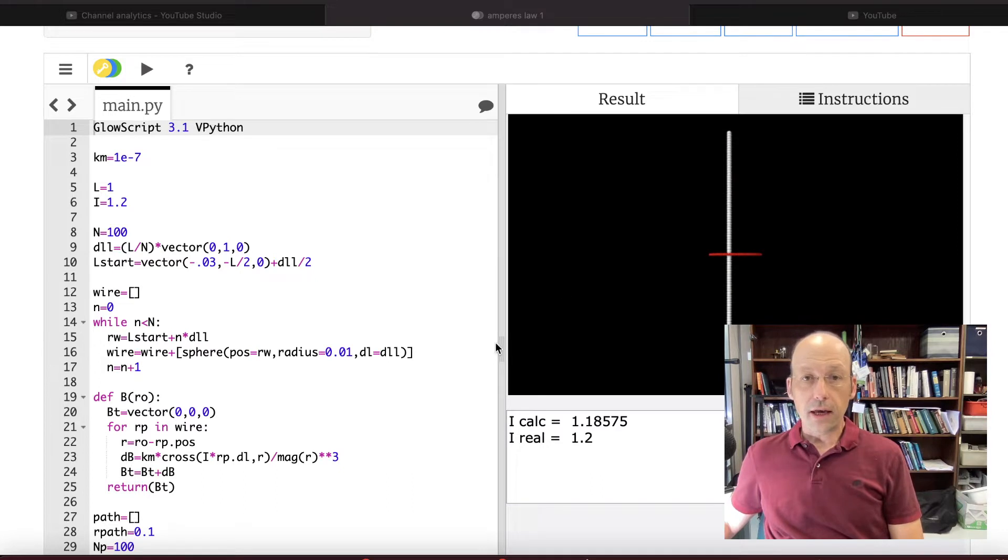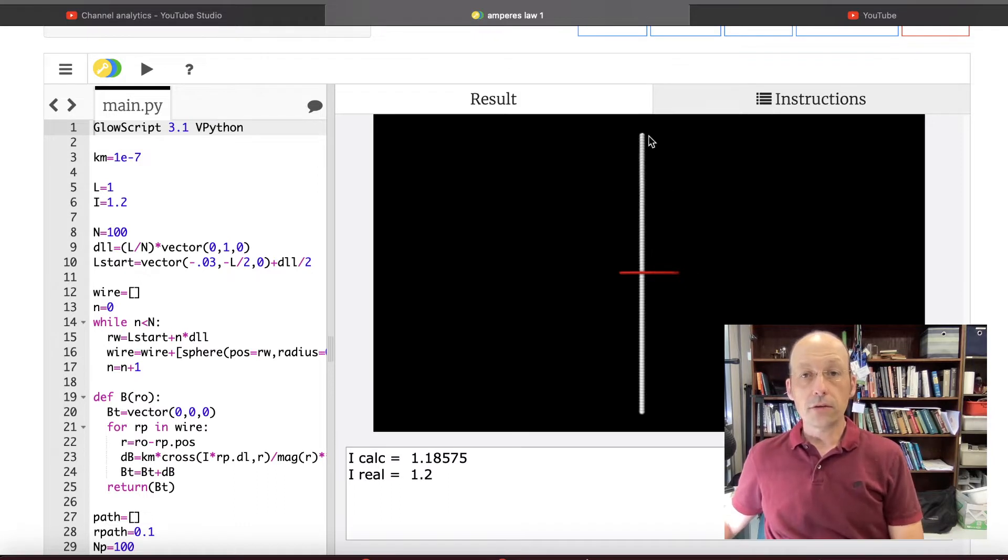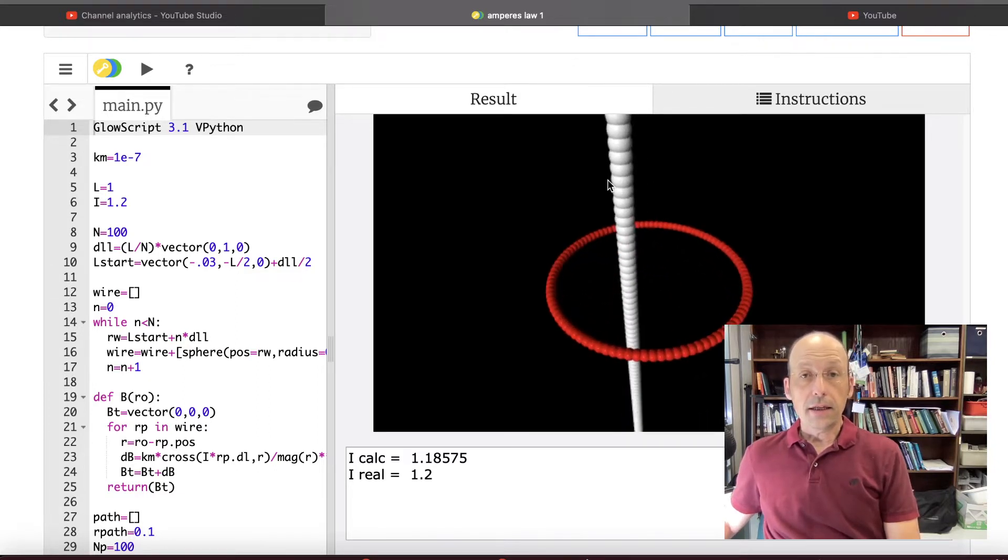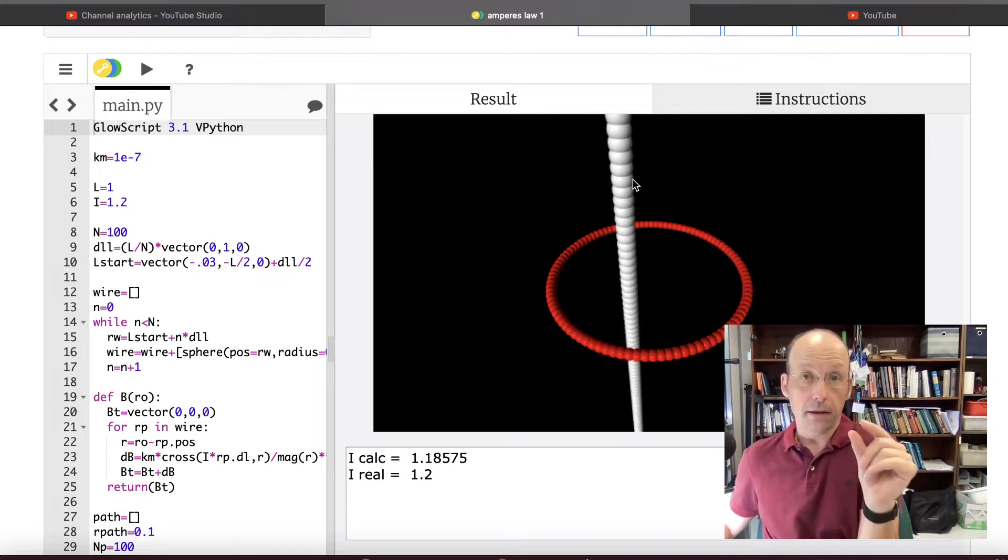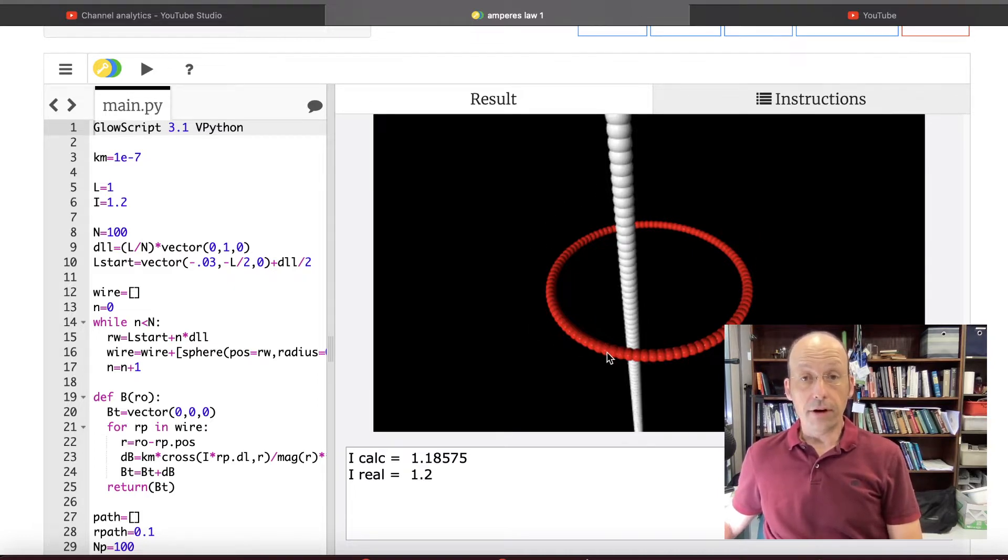So let me just show you the program I have so far. This right here is a wire. So it's a long wire and it's broken into a hundred pieces. They're actually little spheres that it's broken into. And each one of those has a current and a length and a length vector, DL. So from that, I can calculate the magnetic field anywhere I want. So what I did was actually make this path and I integrated B dot DL along this path. And then I calculated based on Ampere's law what's the current passing through that and what's the actual current passing through that. And you see that they're pretty close.